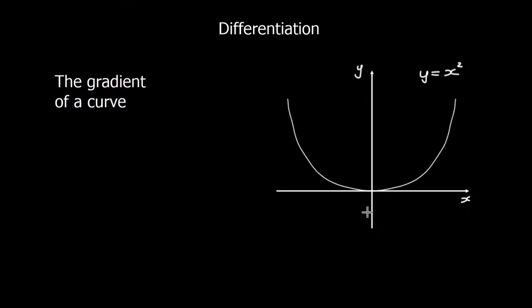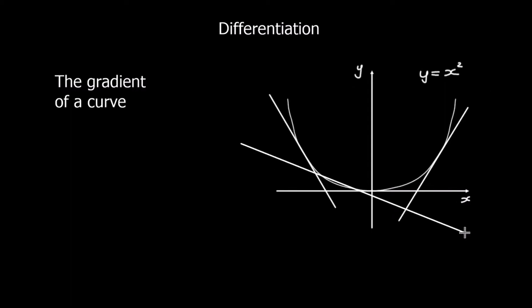Here we have the graph of y equals x squared. As we move along the curve, the gradient at different points is different — the gradient changes as we move along the curve. Here we've got a negative gradient, over here we'll have a positive gradient, and down here the gradient is different again. The gradient changes as you move along the curve, and we use differentiation to find the gradient at a point on a curve.